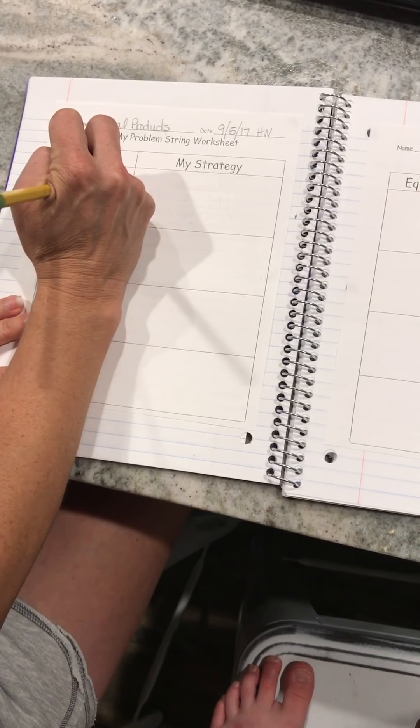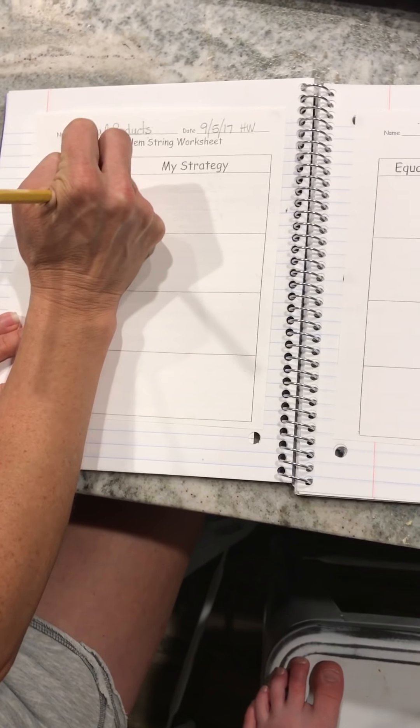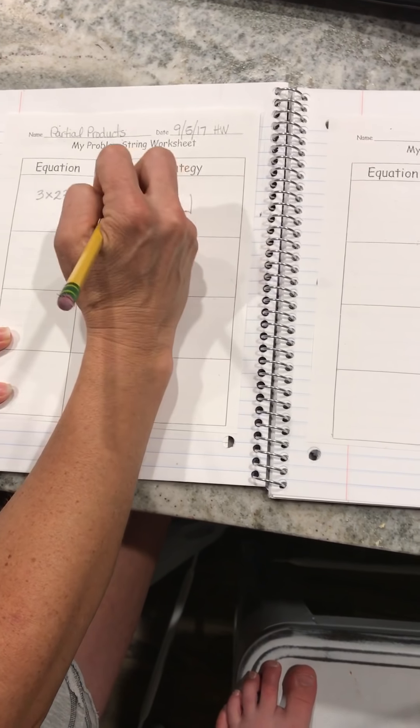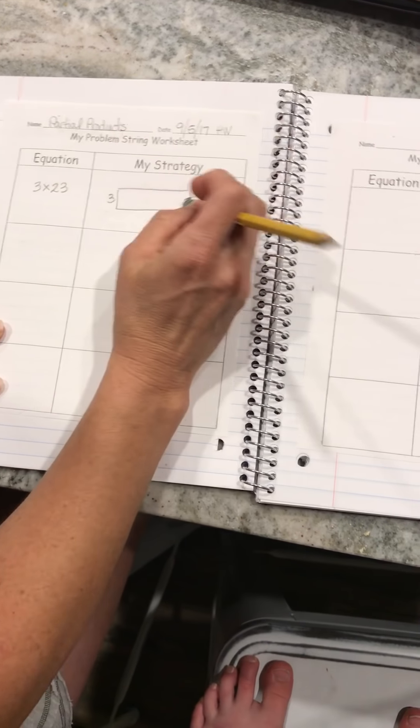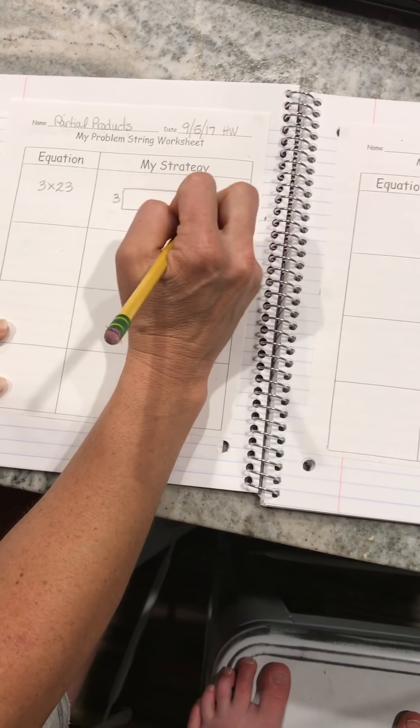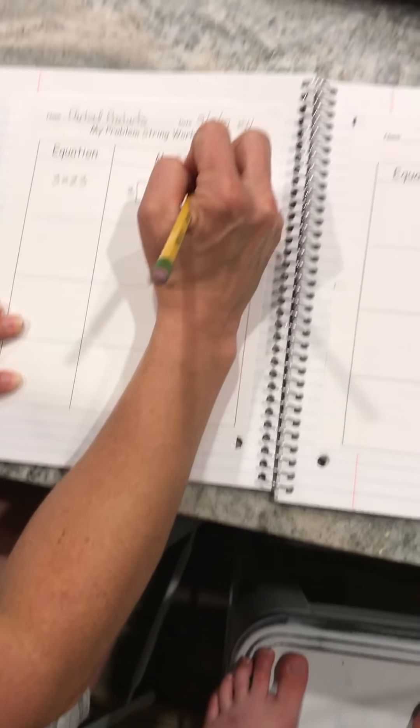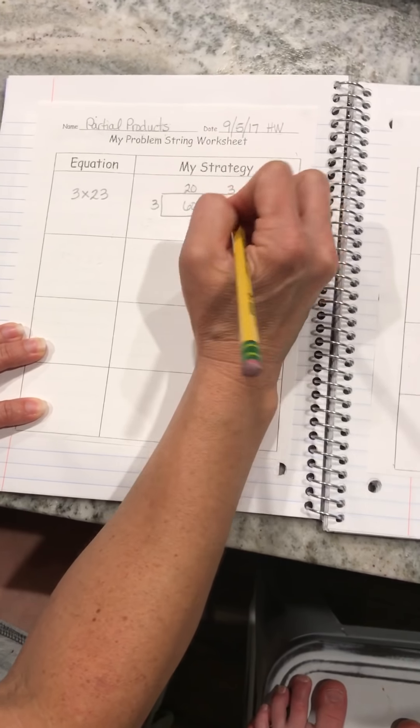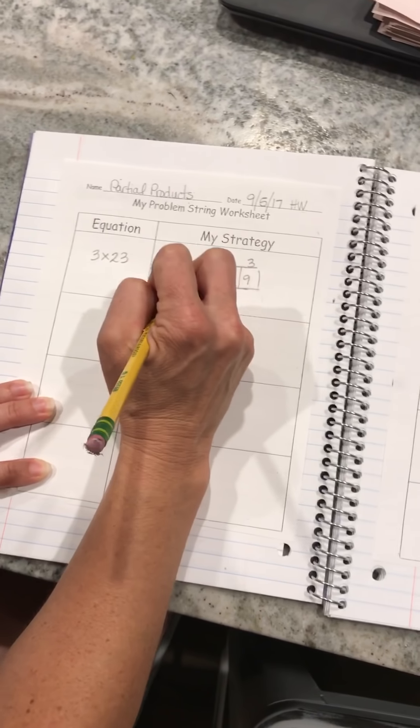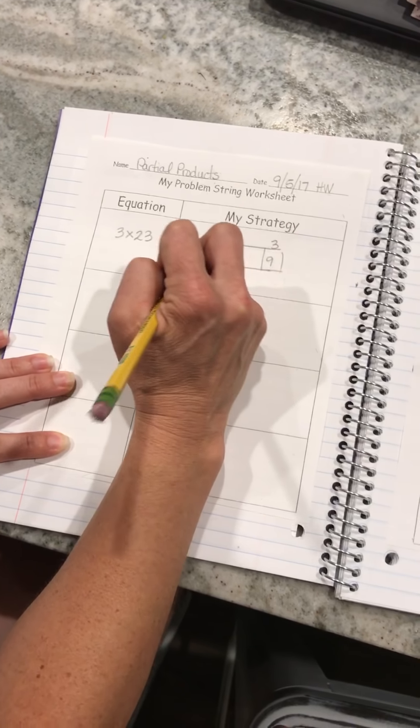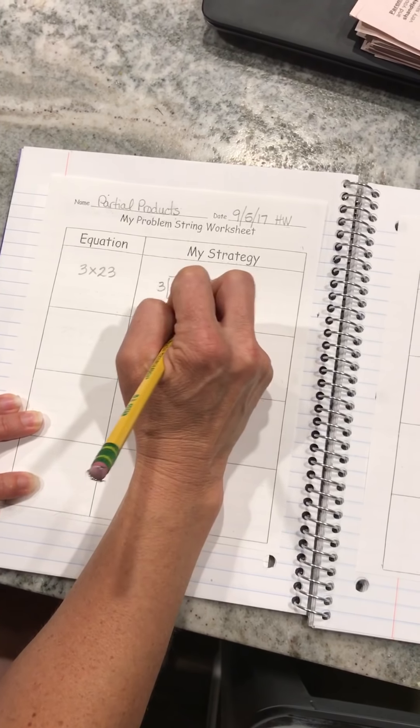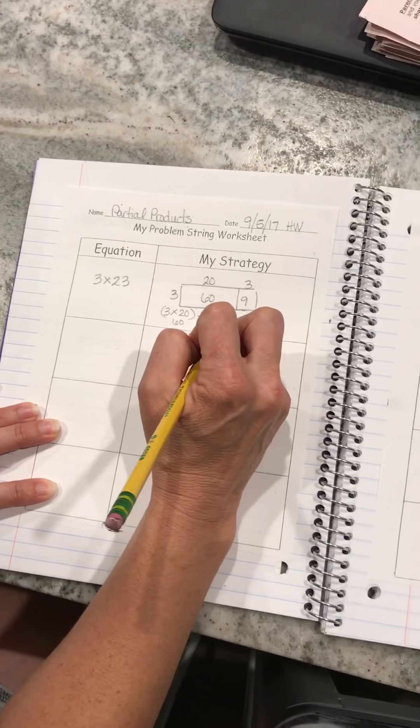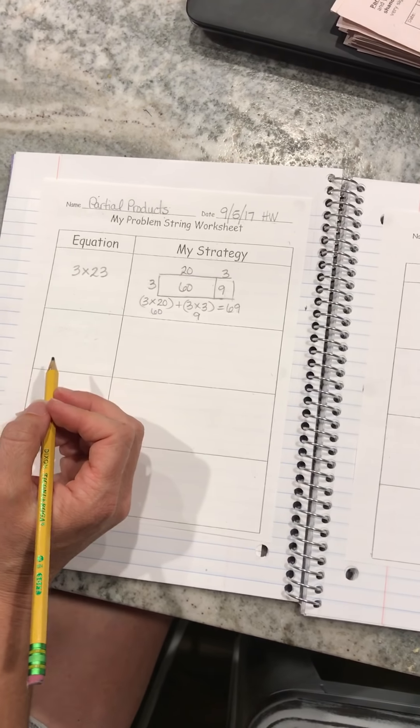My first equation is 3 times 23. I'm going to do this by using partial products and breaking it up. I have a 3 by 23 area model here, but I'm going to break it up to 20 and 3. So I know that 3 times 20 is 60 and 3 times 3 is 9. I can write that 3 times (20) plus 3 times (3) equals 69. Because 3 times 20 is 60 and 3 times 3 is 9, together it makes 69.